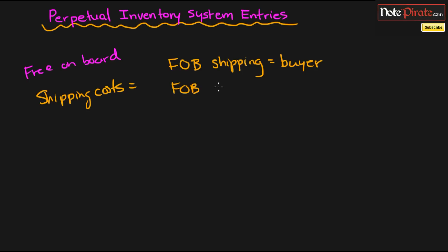And the other one is FOB destination, which is when the seller pays for the shipping costs. And I think a good way to remember this is to think that the seller wants to get the inventory to that destination. So just think that destination is always associated with the seller.